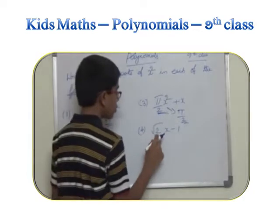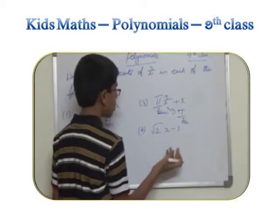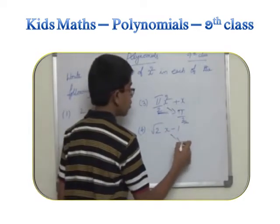Now this one, root 2 x minus 1. There is no x squared, so the coefficient is 0.